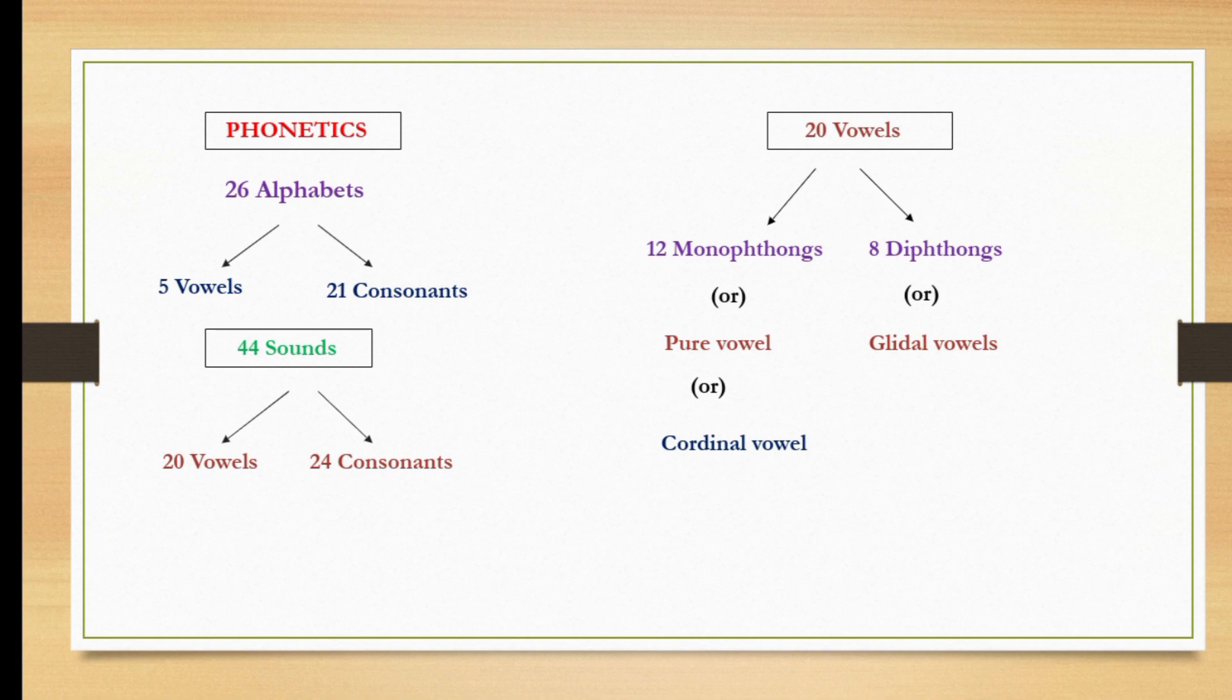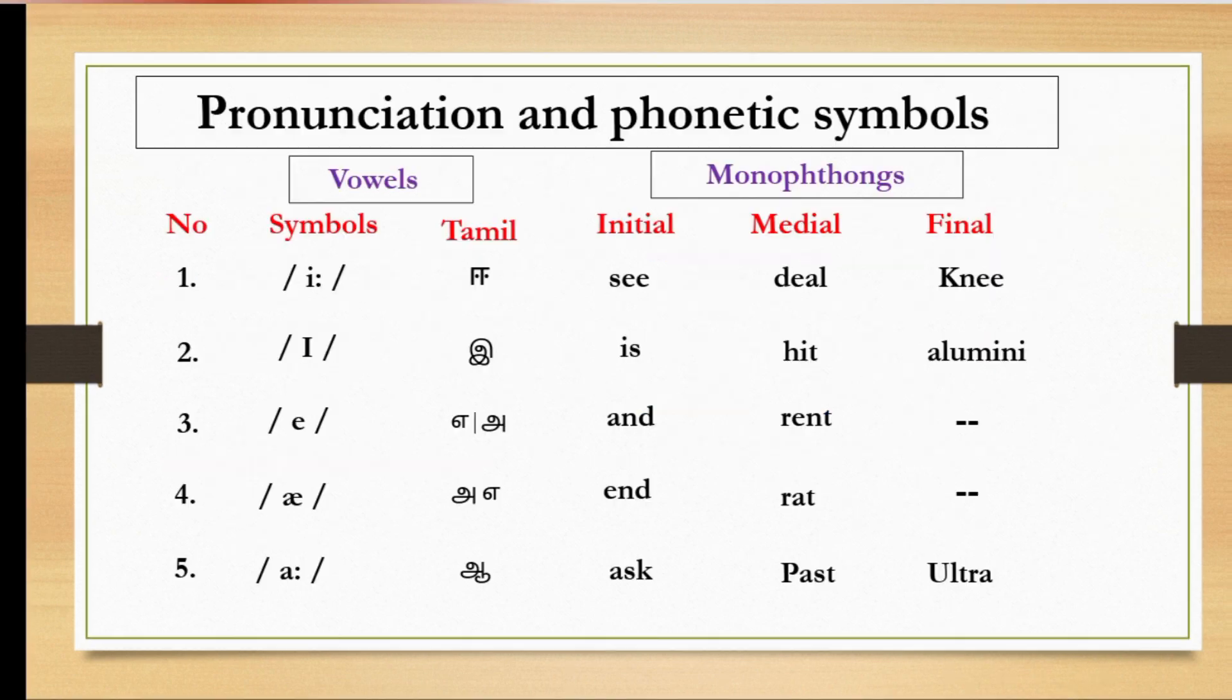Ok friends, now we are going to see about 44 sounds in English phonetics. This furthermore divided into two types. One is vowel sound, another one is consonant sound. There are 20 vowel sounds and 24 consonant sounds in English phonetics. Now let's see about vowel sounds. Vowel sounds furthermore divided into two types. One is monophthongs, another one is diphthongs. There are 12 monophthongs and 8 diphthongs in English vowels. Monophthongs are another name pure vowel and cardinal vowel, and diphthongs another name glidal vowel. In that, now we are going to see about monophthongs. There are 12 monophthongs in English phonetics. Let's see it one by one.